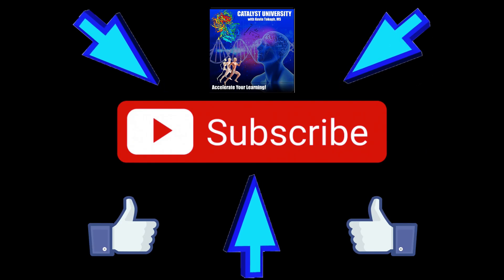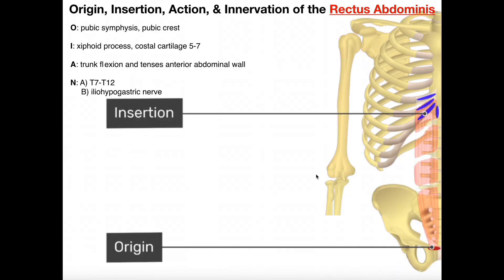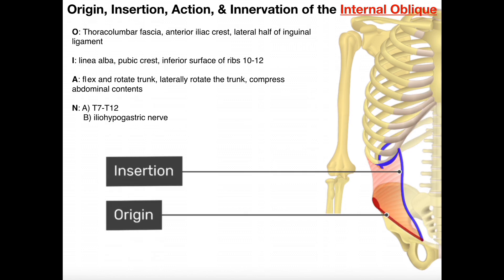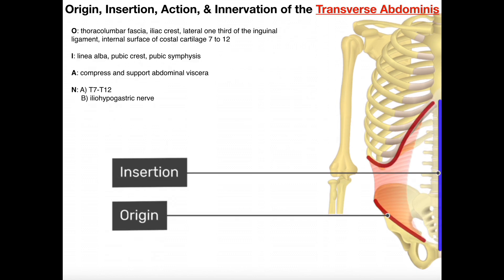Welcome back to Anatomy and Physiology on Catalyst University. My name is Kevin Togoff. Please make sure to like this video and subscribe to my channel for future videos and notifications. In this video, we're going to be discussing the origin, insertion, action, and innervation of the four major abdominal muscles: the rectus abdominis, the external abdominal oblique, internal abdominal oblique, and the transverse abdominis.